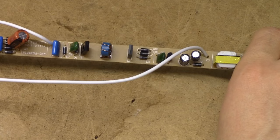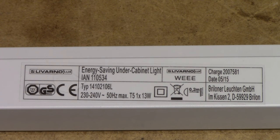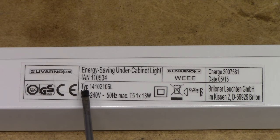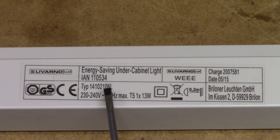Oh, and I almost forgot, the model of this is either a Levano Lux energy saving under cabinet light, or it's a Levano Lux type 14102-106L. These are sold by Lidl sometimes. I'm not entirely certain whether or not you can actually properly install them anywhere else.